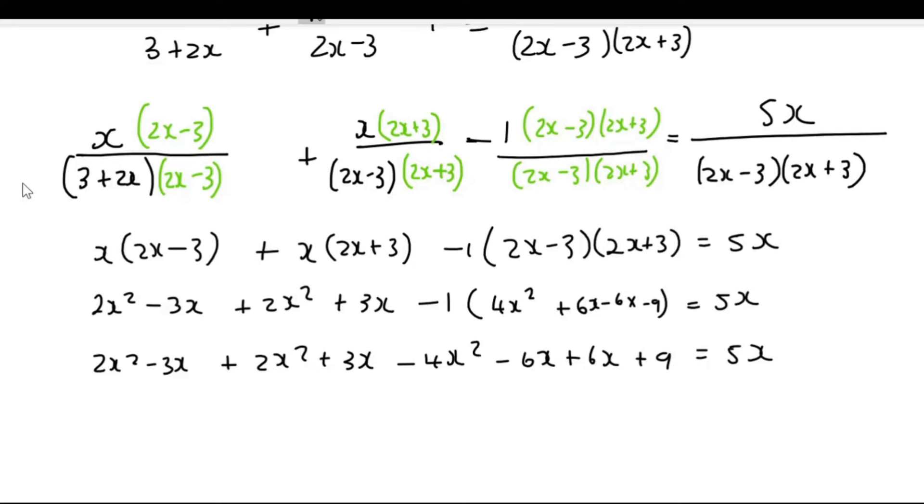So now we can simplify a little bit. So what happens here is that these x squares actually cancel because 2 plus 2 is 4 and then minus 4. And then these x's cancel. And then these cancel. So we actually just end up with 9 is equal to 5x. And so x is going to be equal to 9 over 5. And that is our only answer.